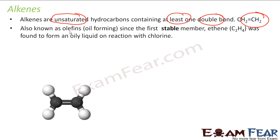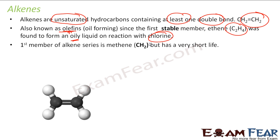They are also called olefins. Why? Because the first stable member of these alkenes, that is ethene, was found to form oil — oil in liquid — on reaction. Long time back when it was discovered, the names were not there. So they called it olefins because it used to form oils on reaction with chlorine.